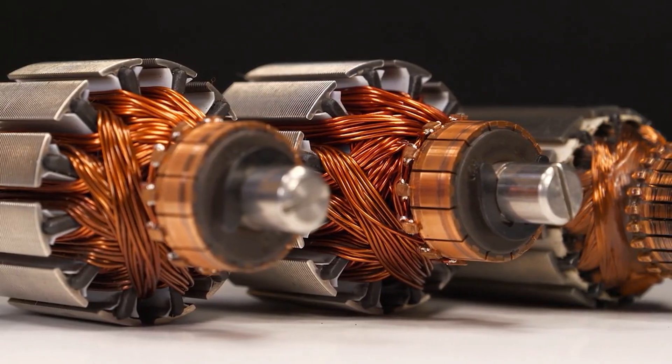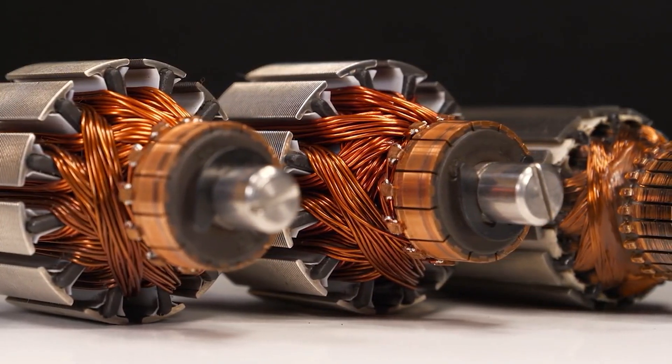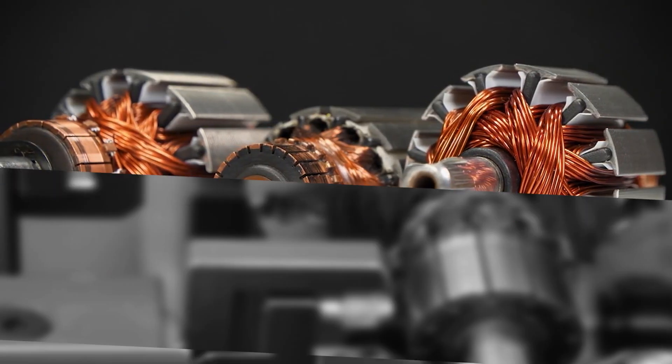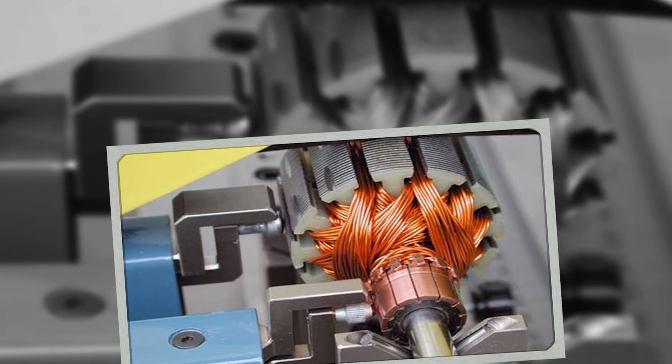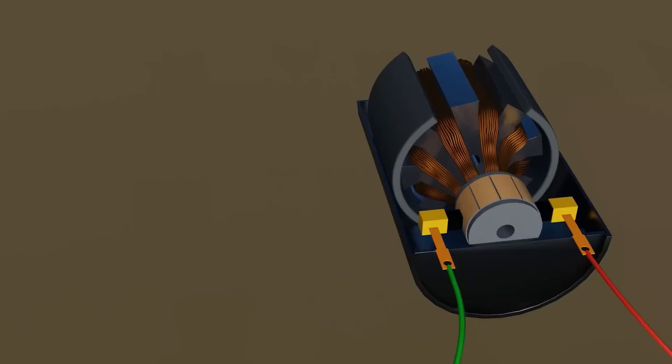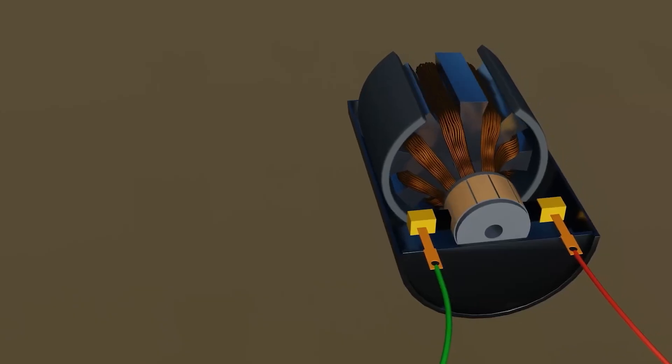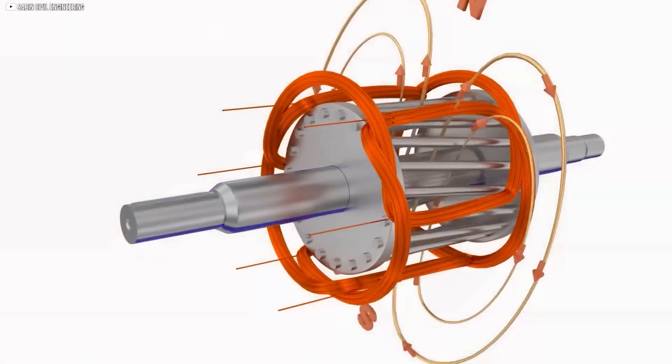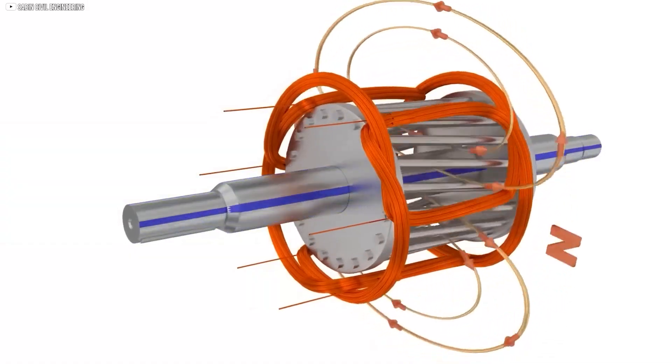In addition to the commutator, brushes are used to maintain electrical contact with the commutator as it rotates. The brushes are spring-loaded, so they stay in constant contact with the commutator's segments. As the armature turns, the brushes transfer the current to the electromagnet, which flips the polarity, pushing the magnet to the next stage of its spin.